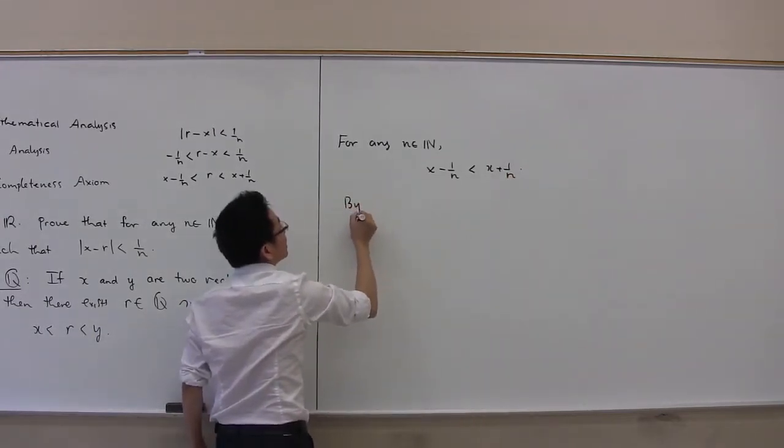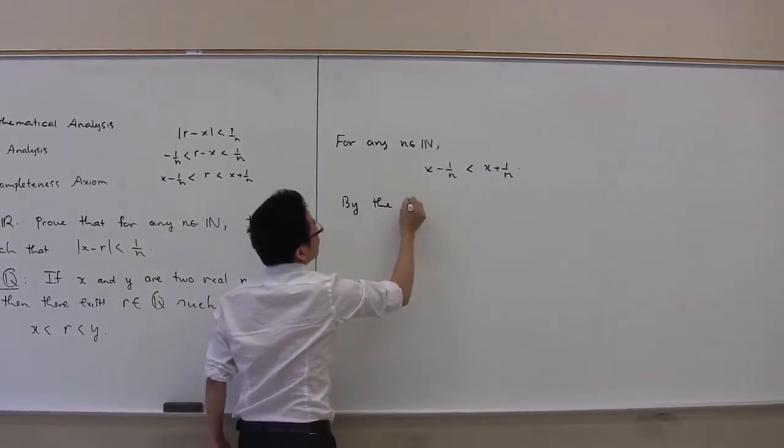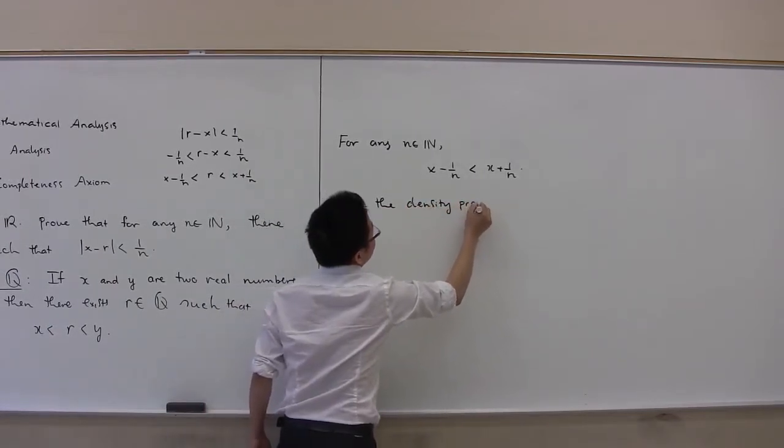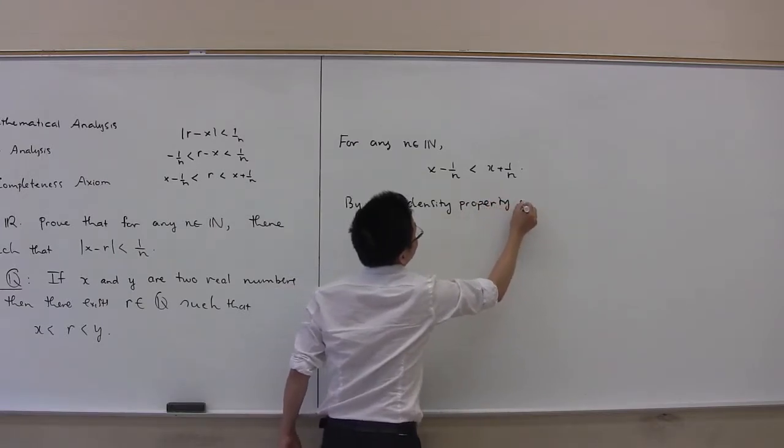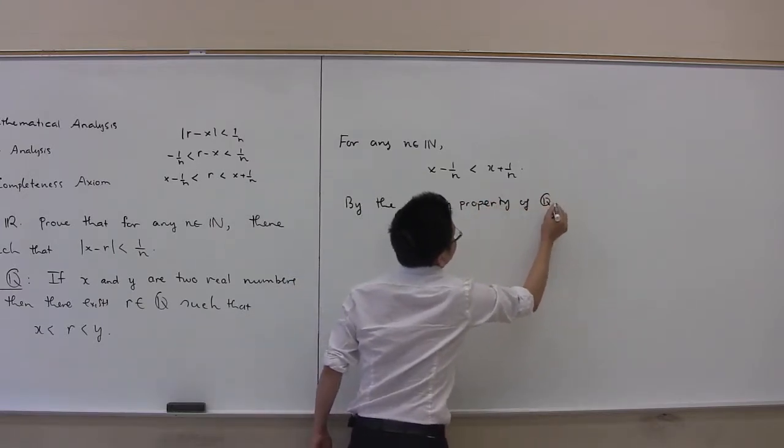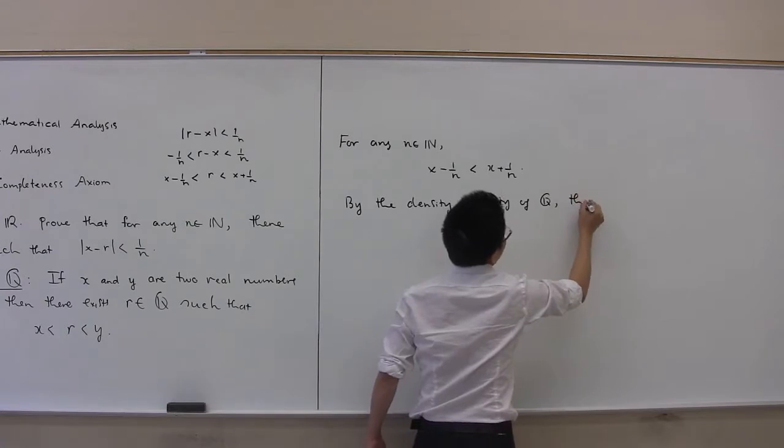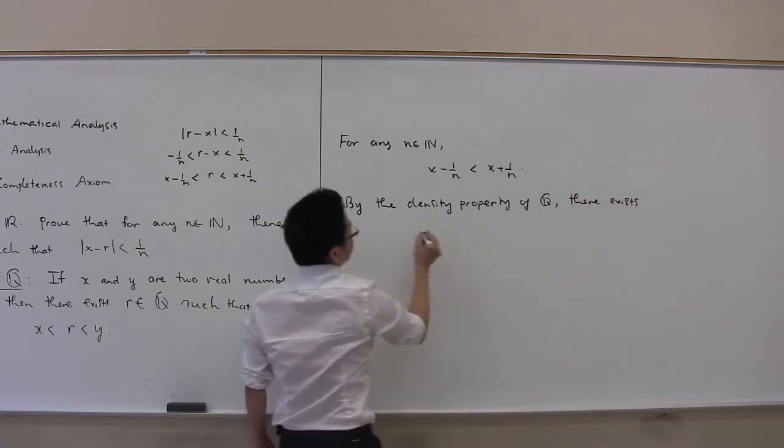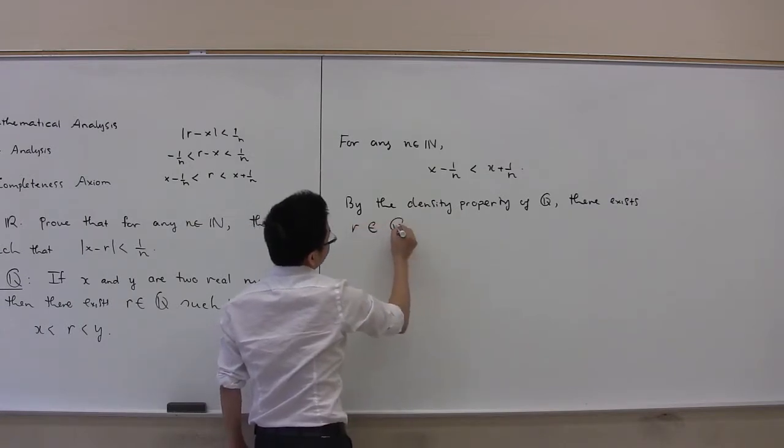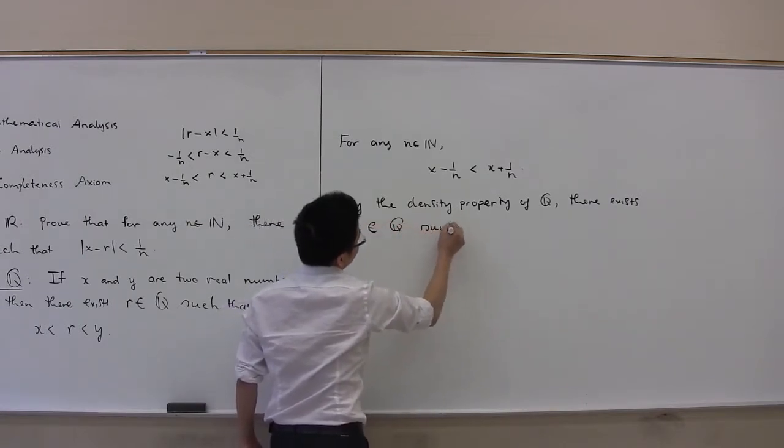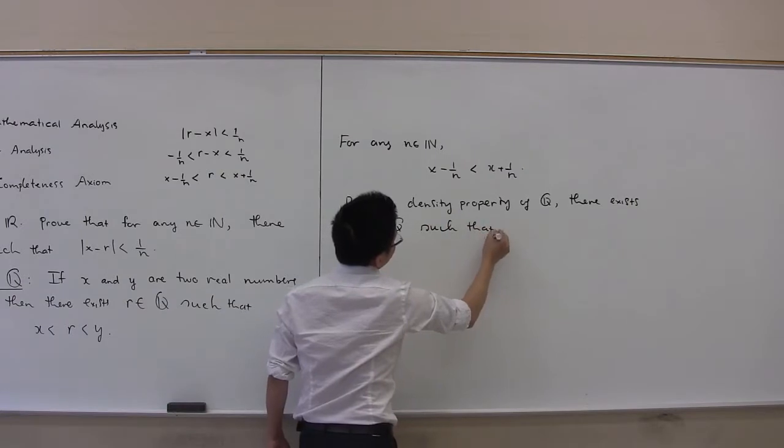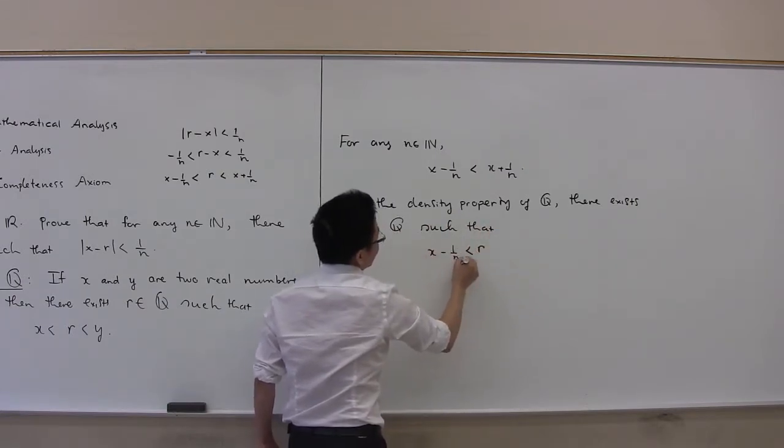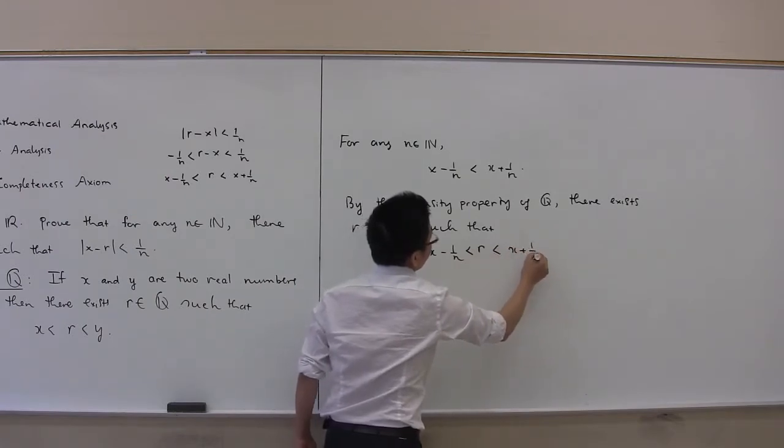By the density property of Q, there exists r in Q such that r is greater than x minus 1 over n and less than x plus 1 over n.